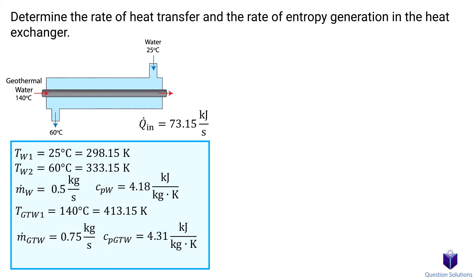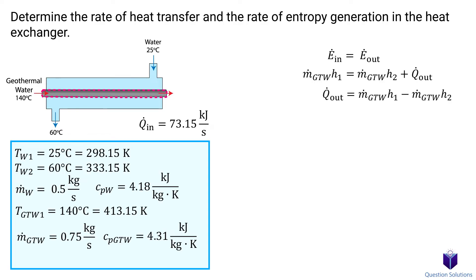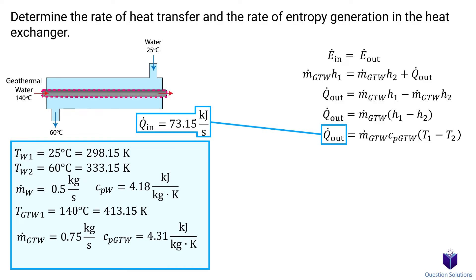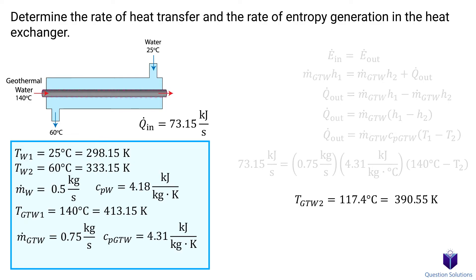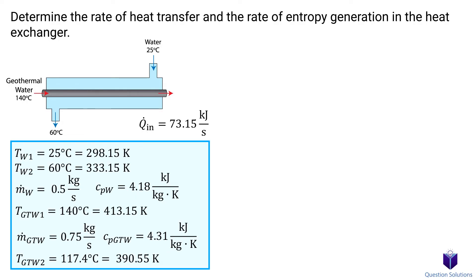Next, we need to find the temperature of the geothermal water after it loses heat to the cold water. Taking the geothermal pipe as our system and writing an energy balance: mass flow and enthalpy in equals mass flow, enthalpy out, and heat output. The heat output equals the heat input to the cold water pipe. Plugging in all values tells us the final temperature of the geothermal water — it went from 140°C to 117.4°C.